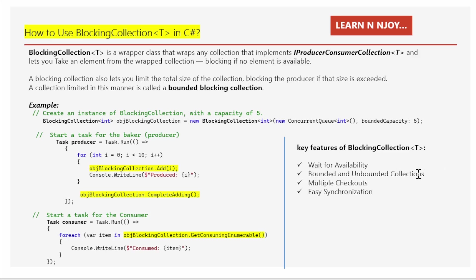Number three: multiple checkouts. If you have multiple checkout lines — that means multiple BlockingCollection<T> instances — and you don't care which one you use, you can ask which line you can join first. You will be added to the first one that has space, or served by the first cashier who is ready. This is like using the AddToAny or TakeFromAny methods of BlockingCollection<T>.